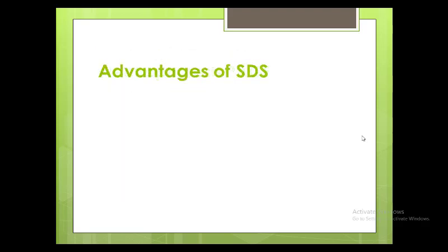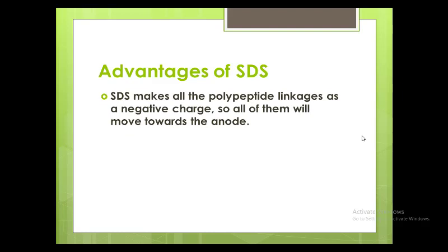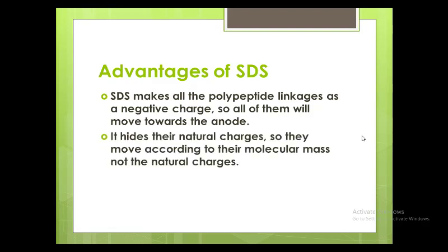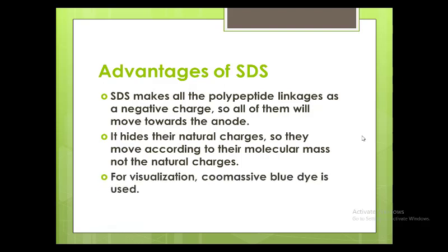What are the advantages of SDS? SDS makes all the polypeptide chains carry a negative charge, so all of them will move toward the anode. It hides their natural charges, so they move according to their molecular mass rather than their natural charge. If the natural charge is not masked, they may move toward the anode or cathode and will not be sorted according to size. For visualization, Coomassie blue dye is used.